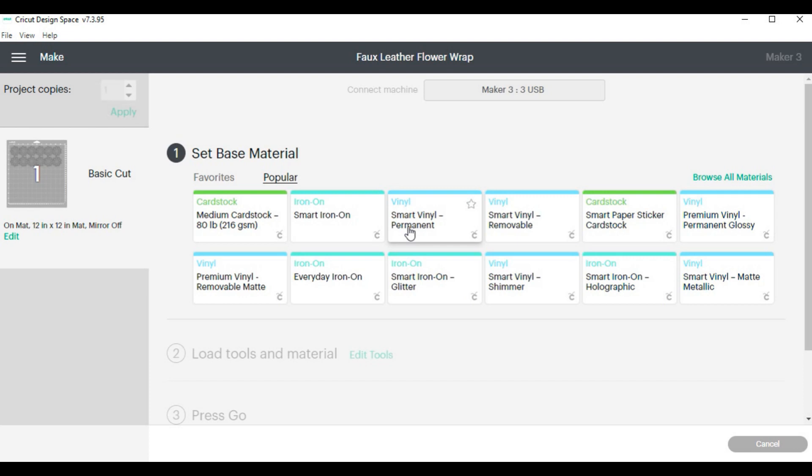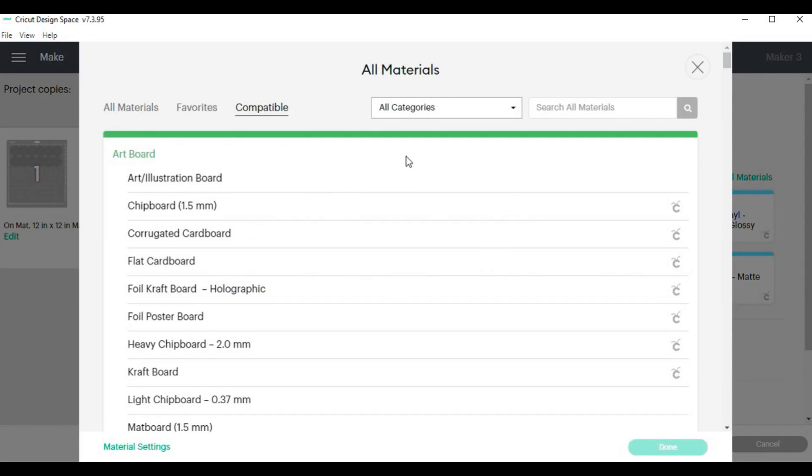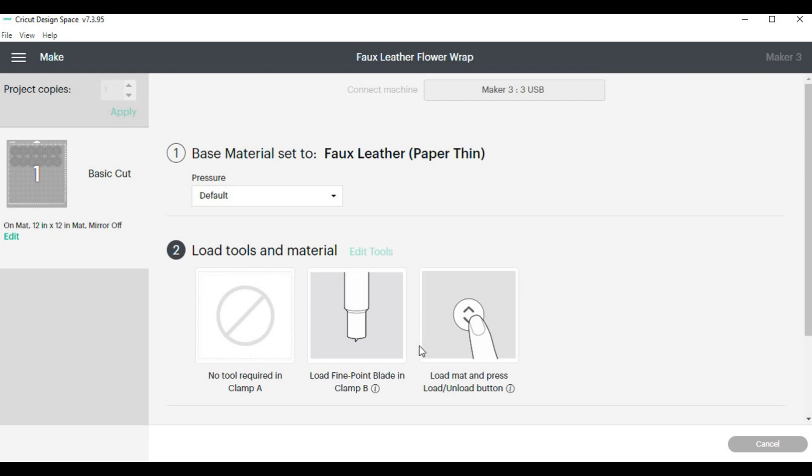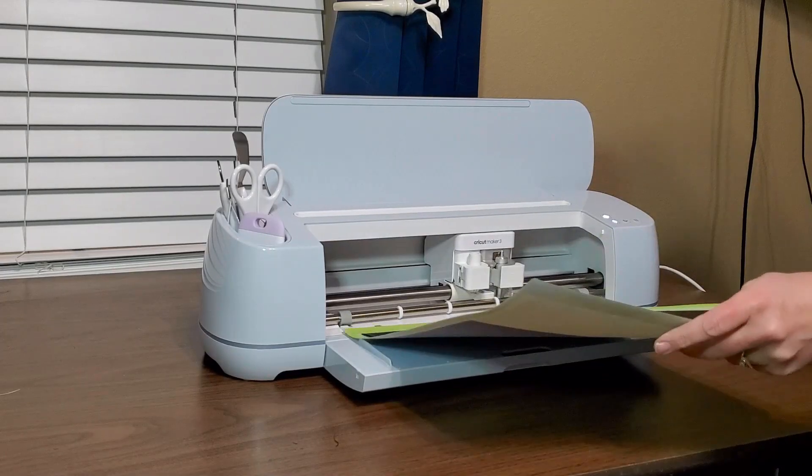You could cut these out of any material but I am going to use the faux leather, so I am going to browse my materials and just type in faux leather and it will bring up that option. I will just select that and then once I select that it will bring up the settings that are appropriate for that type of material.